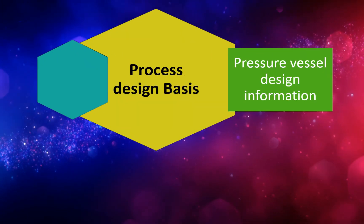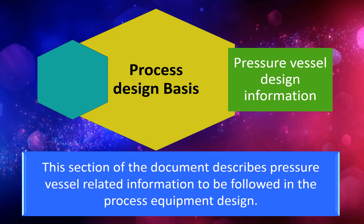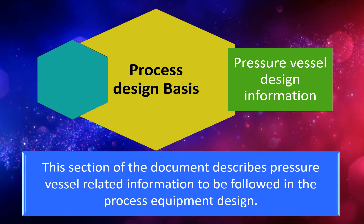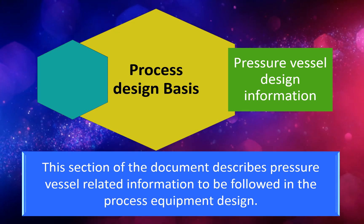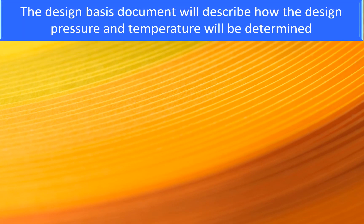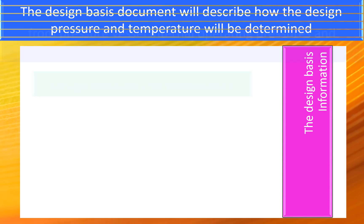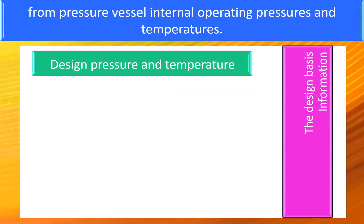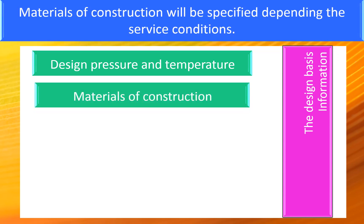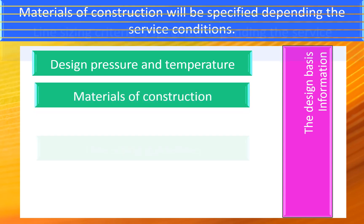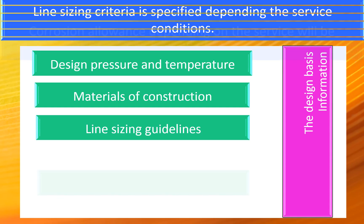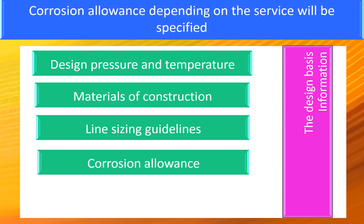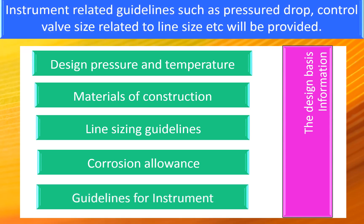Pressure vessel design information: This section describes pressure vessel-related information to be followed in process equipment design. The design basis document will describe how design pressure and temperature will be determined from internal operating pressures and temperatures. Material of construction will be specified depending on service conditions. Line sizing criteria, corrosion allowances depending on service, and instrument-related guidelines such as pressure drop and control valve size relative to line size will also be provided.